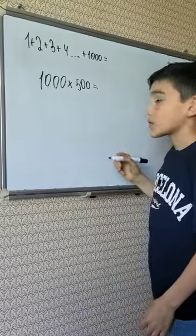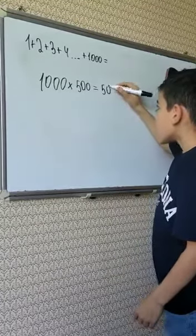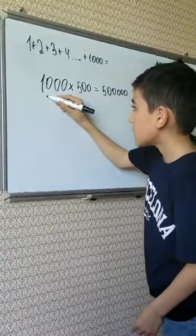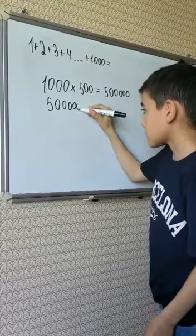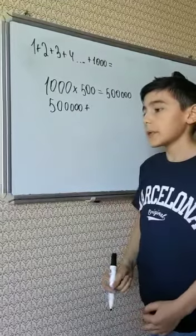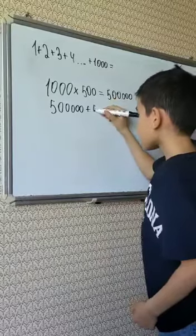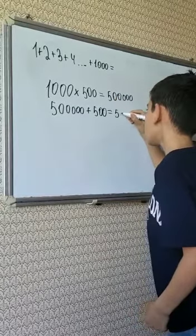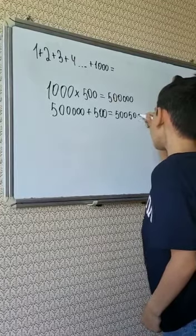And 1000 multiplied by 500 is 500,000. And 500,000 plus 1000 divided by 2. That's 500.